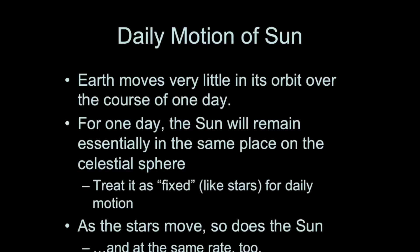What about the sun? How does the motion of the sun appear over the course of a day? It's very much like the other stars. Because Earth doesn't move very far in its orbit in the course of one day, the position of the sun on the celestial sphere doesn't change much in just one day — so we can treat it as a fixed star. For daily motion, as the stars move, so does the sun. The sun is going to rise somewhere in the east, go up and to the right, get high in the southern sky, and then set somewhere in the west.